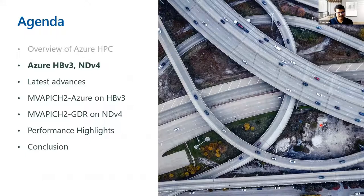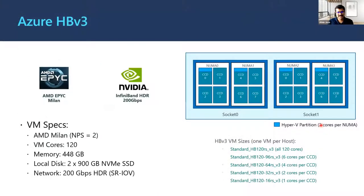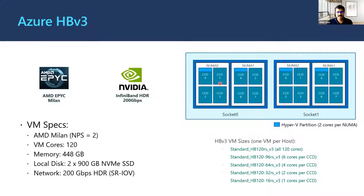Let's take a detailed look at the Azure HBv3 and NDV4 series. The HBv3 is AMD Milan with 200 gigabits per second InfiniBand. In Milan it's a NUMA architecture — we have configured it in NPS2 configuration, where the number of NUMA nodes per socket is two. There are eight cores per CCD and four CCDs per NUMA node. That is the architecture for the HBv3.